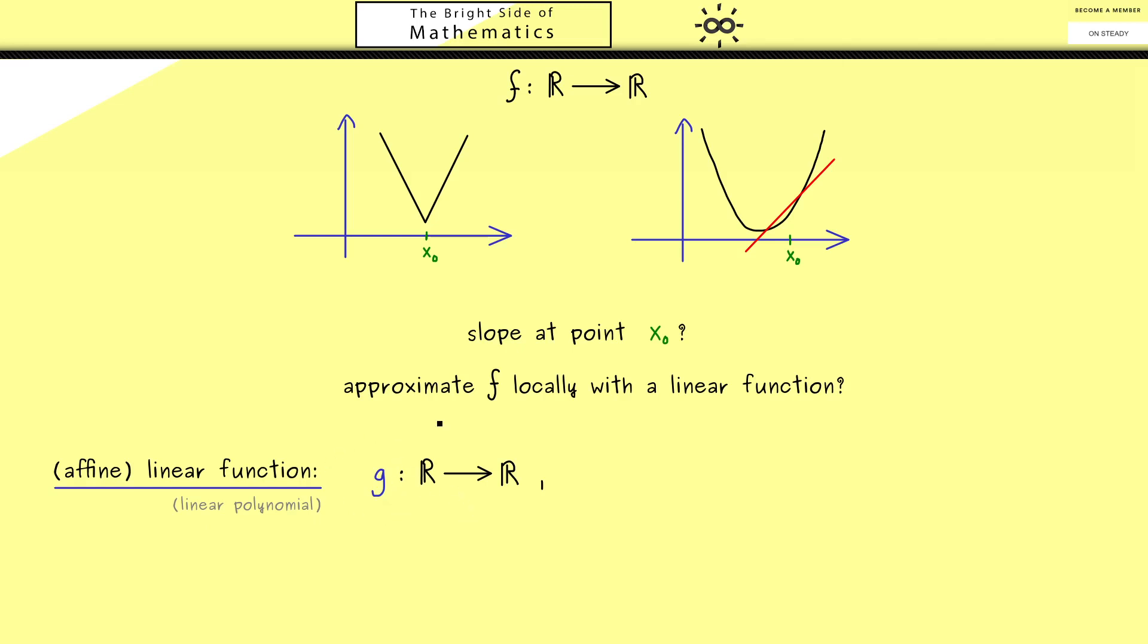So we take a function we call g, given by g where we have a linear part and a constant part. In other words, it's a polynomial where we only have two coefficients involved. In addition, the graph looks very simple because it's just a straight line. Now it's not hard to see that the slope of this graph is exactly the number a₁.